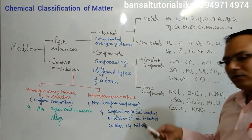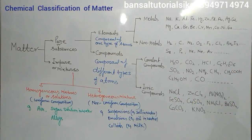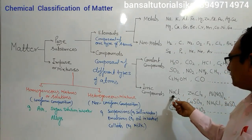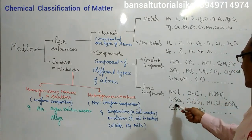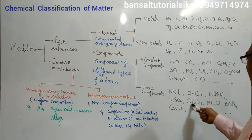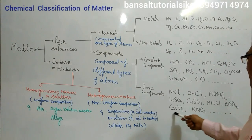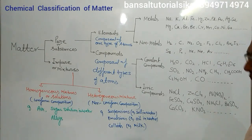Let's take some examples of ionic compounds, like sodium chloride, zinc chloride, lead nitrate, ferrous sulfate, copper sulfate, ammonium chloride, barium sulfate, potassium carbonate, potassium nitrate.